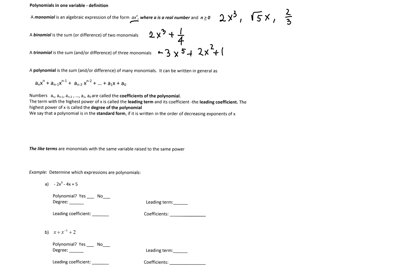The most general formula for a polynomial is given right here — it is the sum of monomials. The coefficients of the monomials are a sub n, a sub n minus 1, a sub n minus 2, and so on. These numbers are called the coefficients of the polynomial. The term with the highest power of x is called the leading term, and its coefficient is called the leading coefficient.